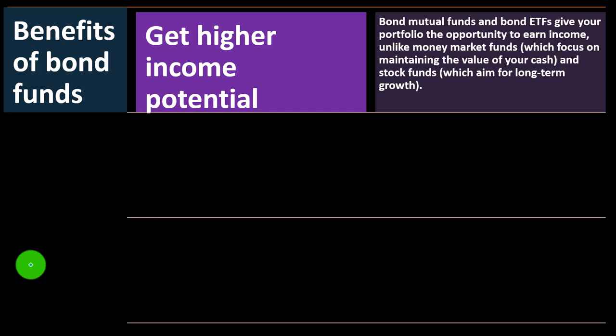Benefits of bond funds: you get higher income potential. Bond mutual funds and ETFs give your portfolio the opportunity to earn income, unlike money market funds, which focus on maintaining the value of cash, and stock funds, which aim for long-term growth. Stocks look for growth potential but may not earn you actual money right now, though you could invest in dividend-paying stocks like utility companies. Money in a money market fund mainly just helps lower the impact of inflation, probably not giving much income above that.